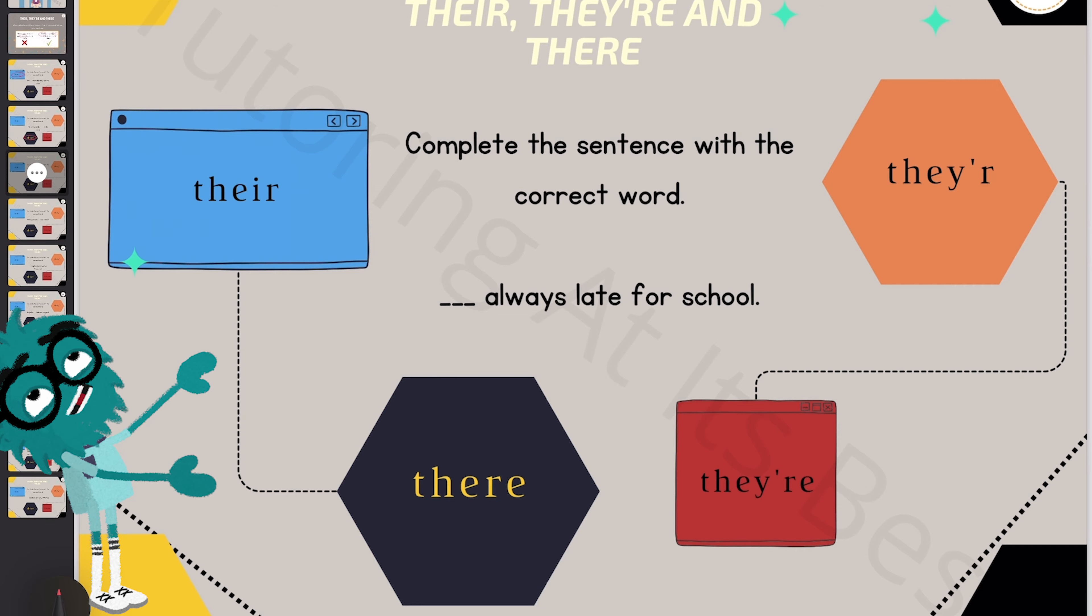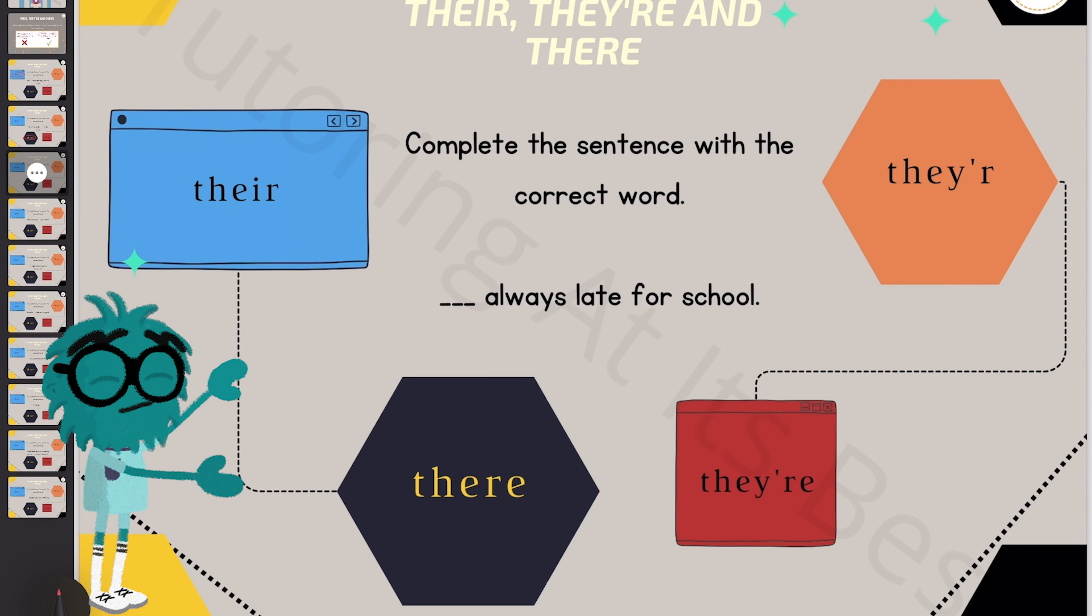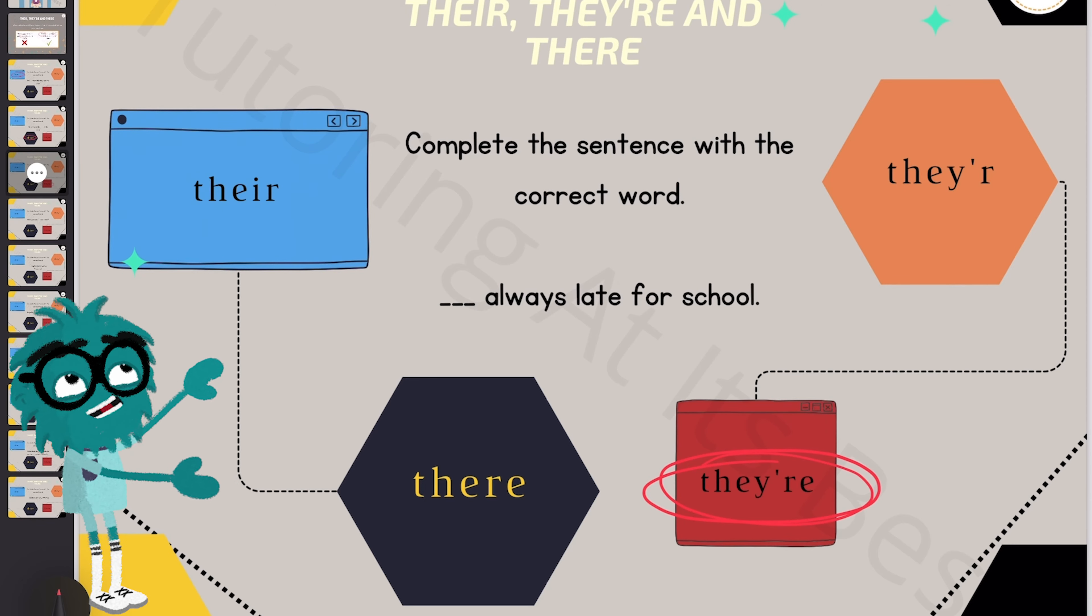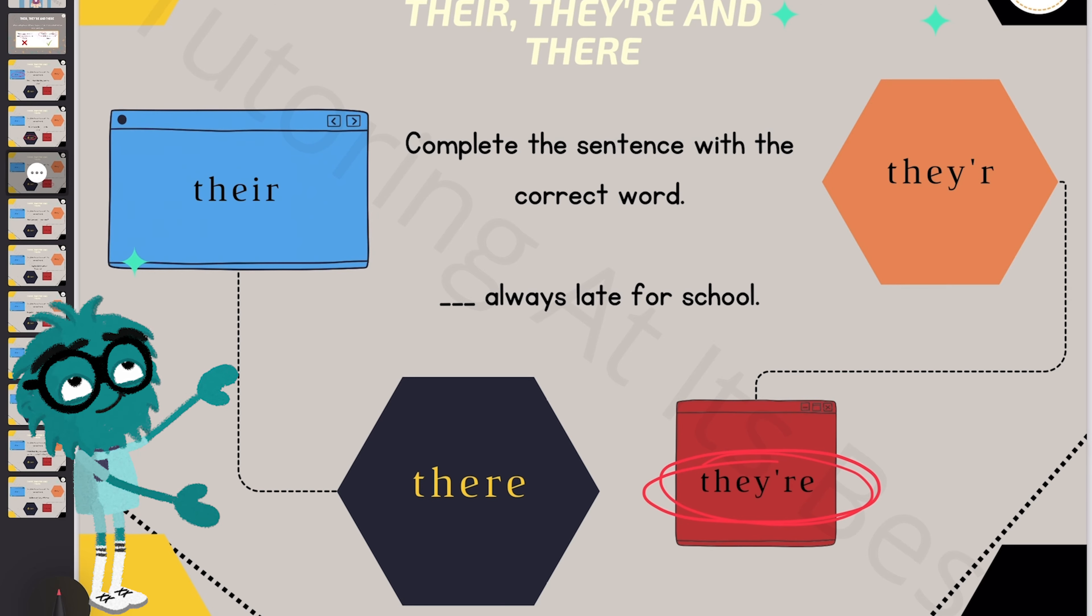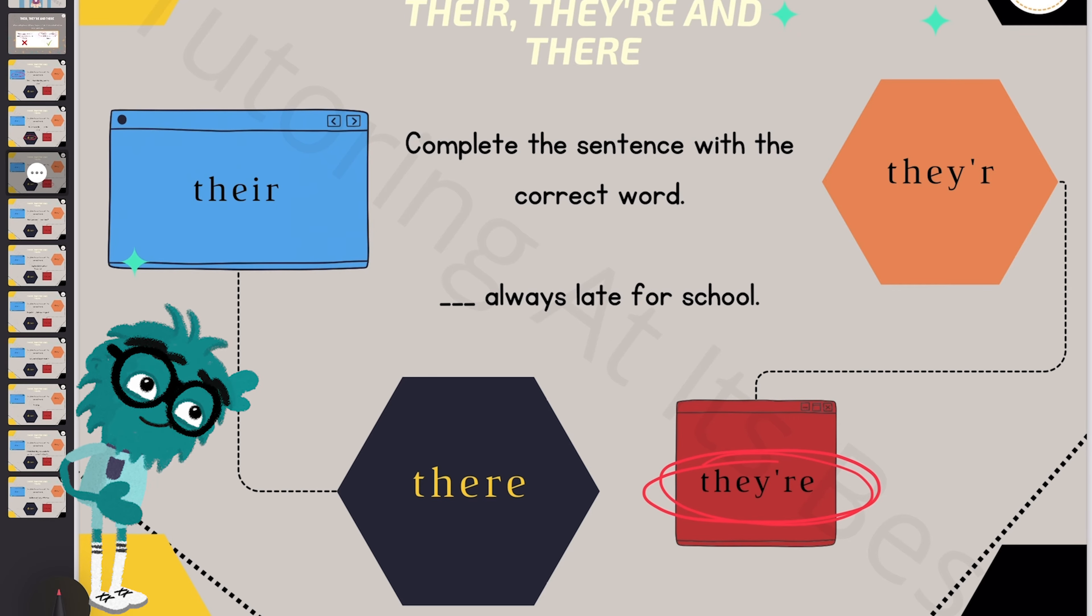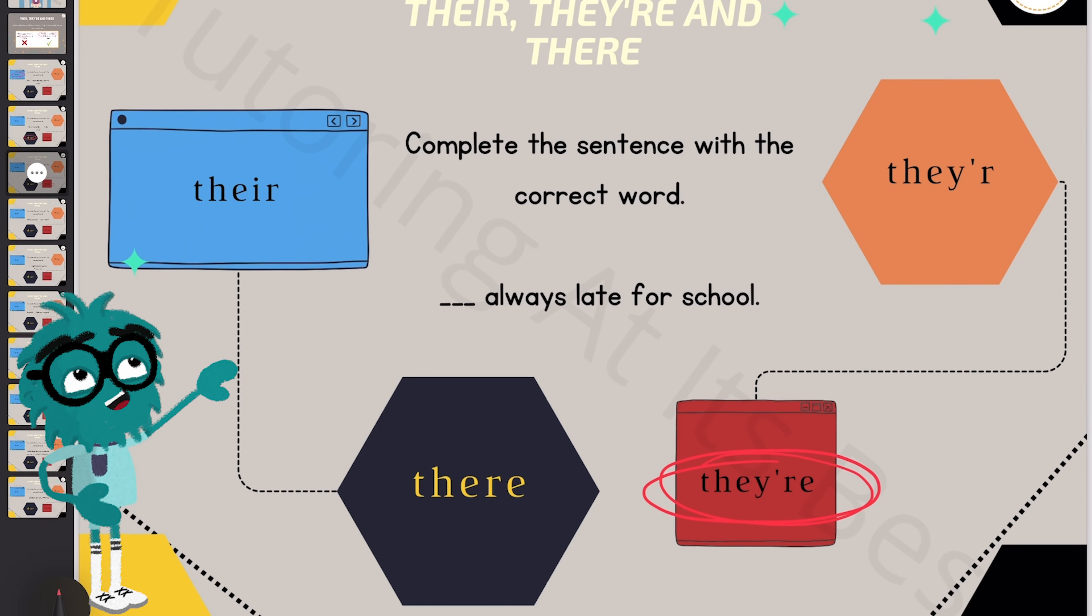On to the next one. They're always late for school. So the correct answer is they are. They are always late for school. So again, I hope you can see how I'm breaking this down, how I'm relating each there to the context, but also to understand if it's a possessive adjective, if it's an adverb, or if it's seen as a contraction.